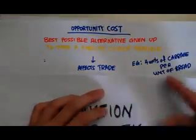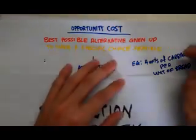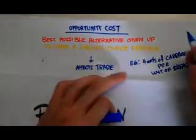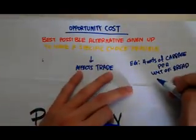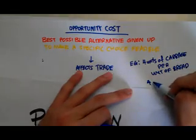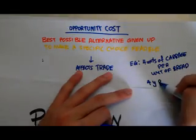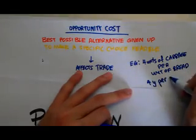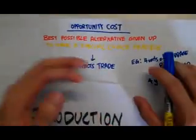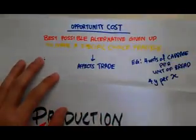This is how opportunity cost is depicted. In short form, you can write it as 4 units of Y per X — that's if you know what your X and Y are.